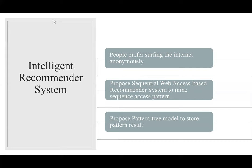Based on the sequential pattern mining technique, the authors propose an intelligent web recommendation system called the sequential web access-based recommender system. This system aims to predict which website is more likely to be accessed by a specific person while they are browsing the internet. A person's activity, including IP, time of visiting, and URL, is stored in web server logs, and the system mines the sequence access pattern. A model called pattern tree, an efficient algorithm for measuring access patterns and formulating web links, was also proposed to store the pattern results.